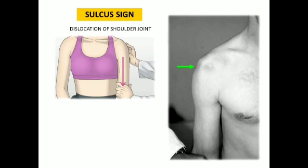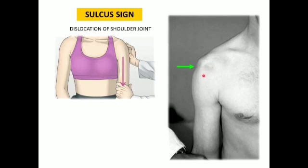Once you suspect shoulder joint dislocation, you can perform a test called the sulcus sign. First, make the patient sit comfortably, then press with one or two fingers at the lateral aspect of the shoulder joint and gently pull the arm downwards. Be careful — do not pull forcefully, because the shoulder is already dislocated and excessive force can increase the severity of dislocation.